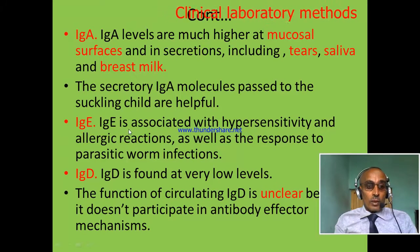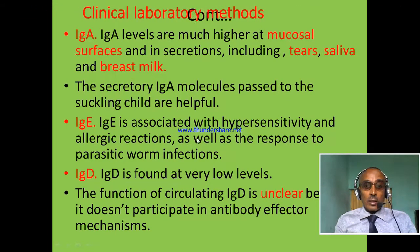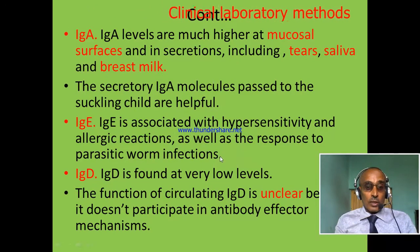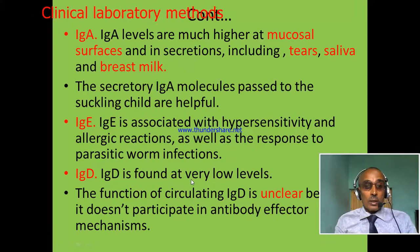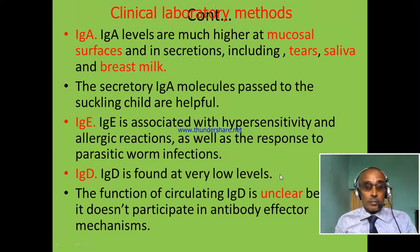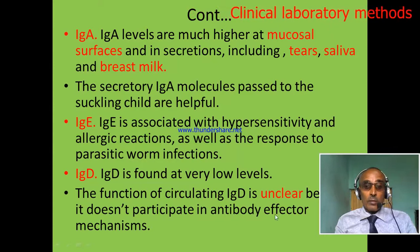The fourth immunoglobulin is associated with hypersensitivity and allergic reactions like asthma, and it can also be produced during parasitic worm infections. The fifth immunoglobulin is found at a very low level in the serum. It has no well-known function because it doesn't participate in antibody effector mechanisms.